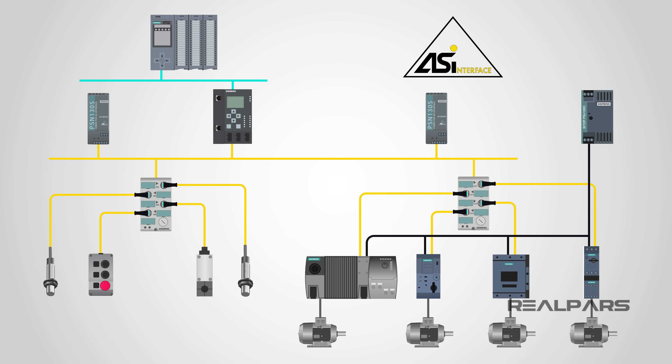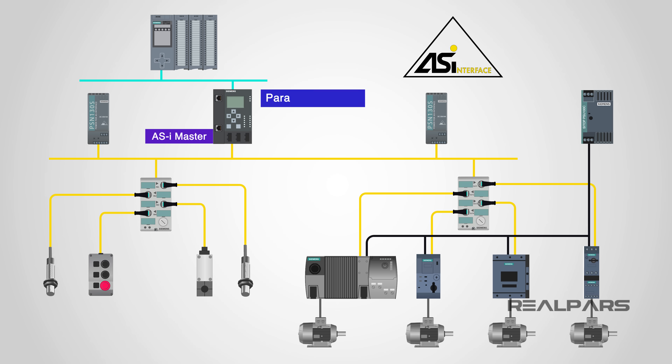A system built using the AS Interface typically has three components. Firstly, there is the AS Interface master — the head of the network. The AS Interface master provides the connection to the higher level control system. It organizes all of the data traffic on the line and is responsible for parameter setting, diagnostics, and monitoring.